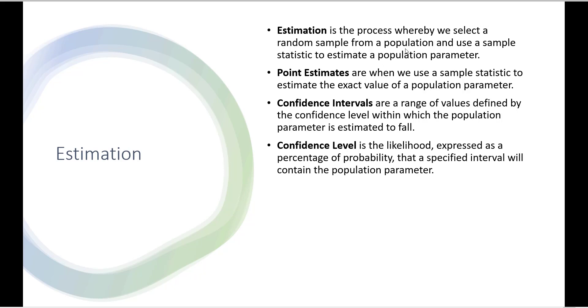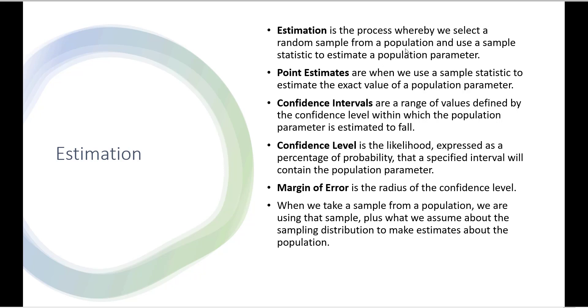This confidence level is the likelihood, expressed as a percentage or probability, that a specified interval will contain the population parameter. The margin of error is the radius of this confidence interval.